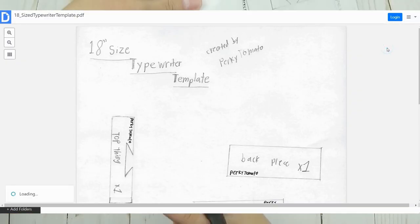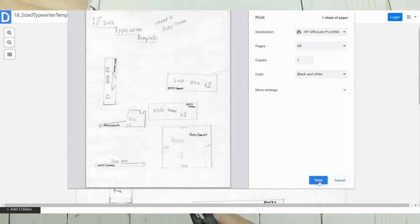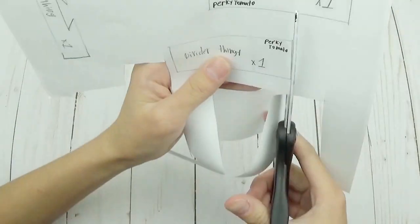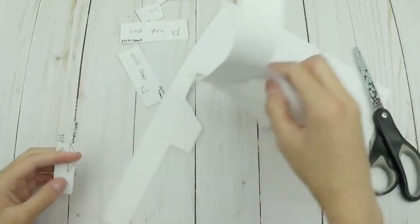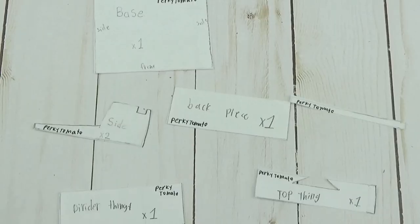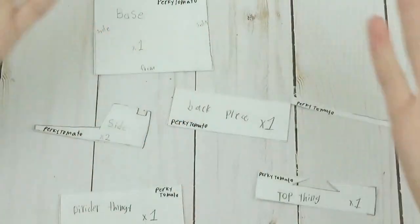First thing you're going to do is print off the template in the description box below, and then you're going to cut out all of these pieces very carefully and try to do it along the lines. I've got all my pieces cut out.